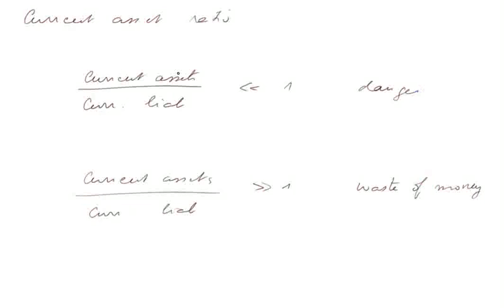In other words, the current asset ratios, when it's much less than one, there is danger. And conversely, when it's much more than one, it's a waste of money because we have too much liquidity, or not enough current liabilities.